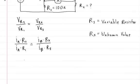So that gets rewritten as R2 divided by R1 is equal to the resistance in the unknown resistor divided by the variable resistor RS.